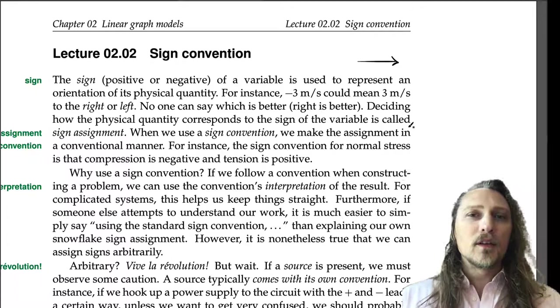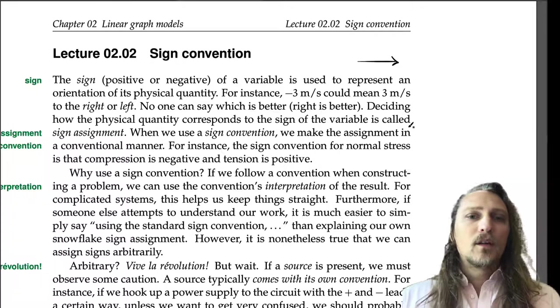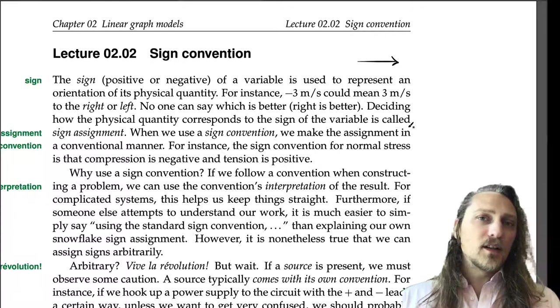When we use a sign convention, we make the assignment in a conventional manner. For instance, the sign convention for normal stress is that compression is negative and tension is positive.